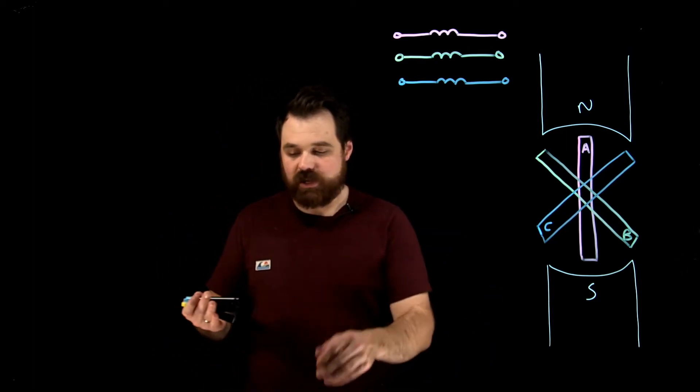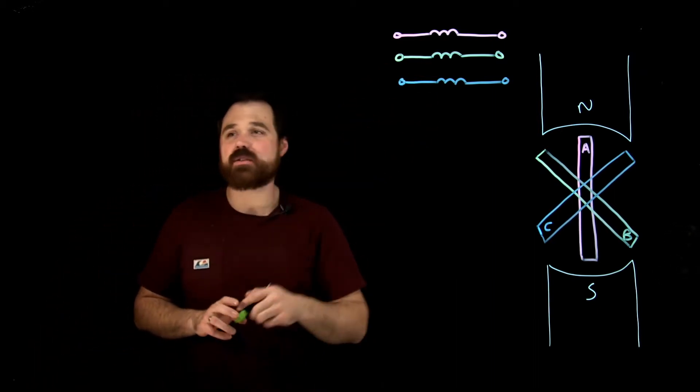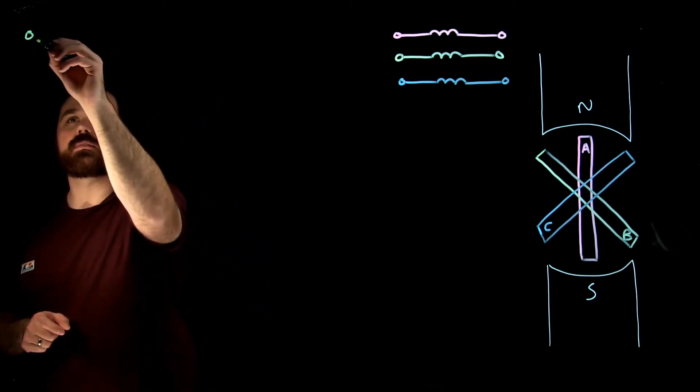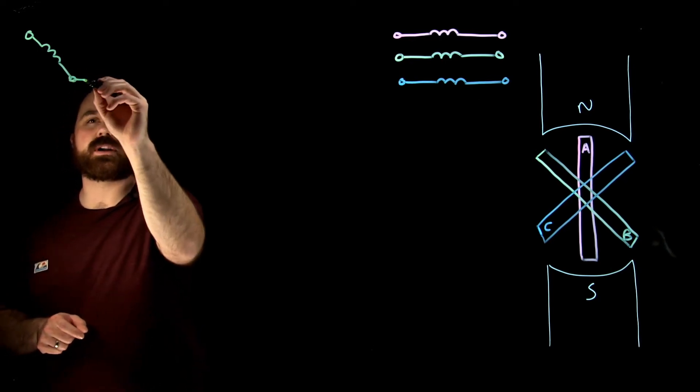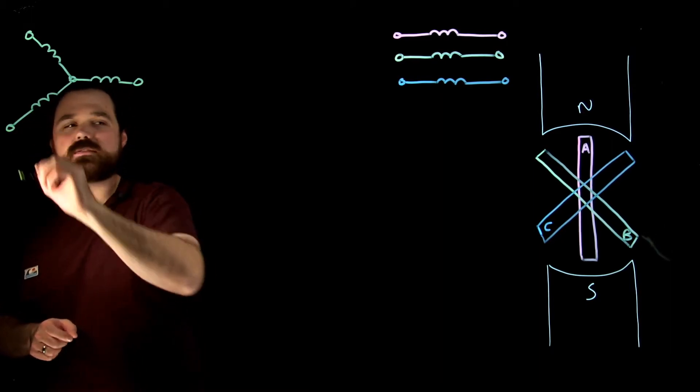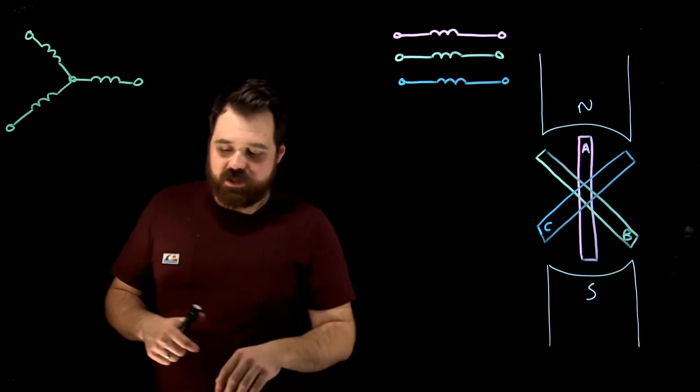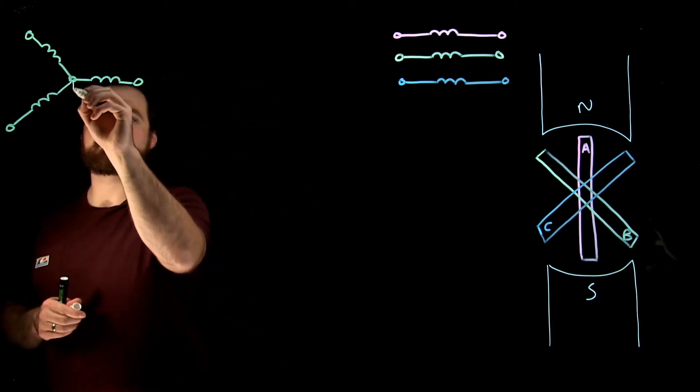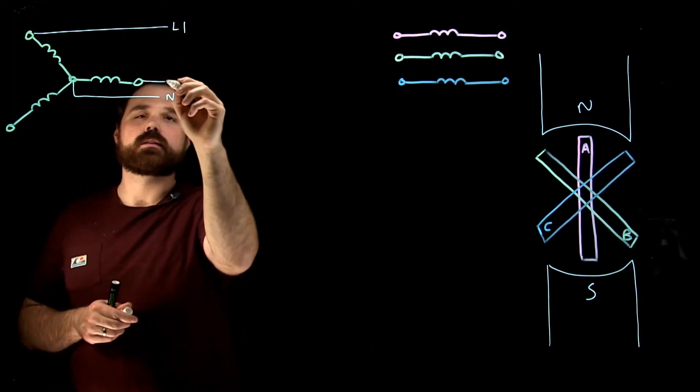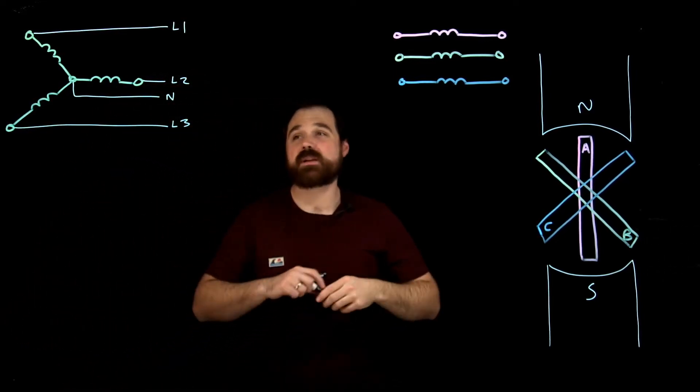So let's start with a Y source. If we wanted to deal with a Y source, we would take those three windings and connect them in that Y formation. So we connect up a center point and connect them so they all have a center point just like that. And that center point will usually connect up to a neutral conductor, a neutral. And then we would have line one, line two, and line three that we would connect up, and that would be our source.